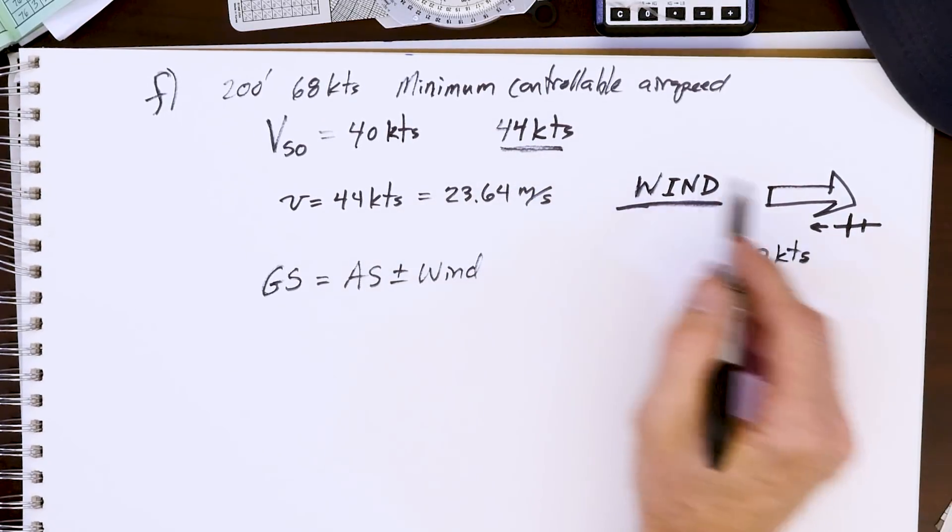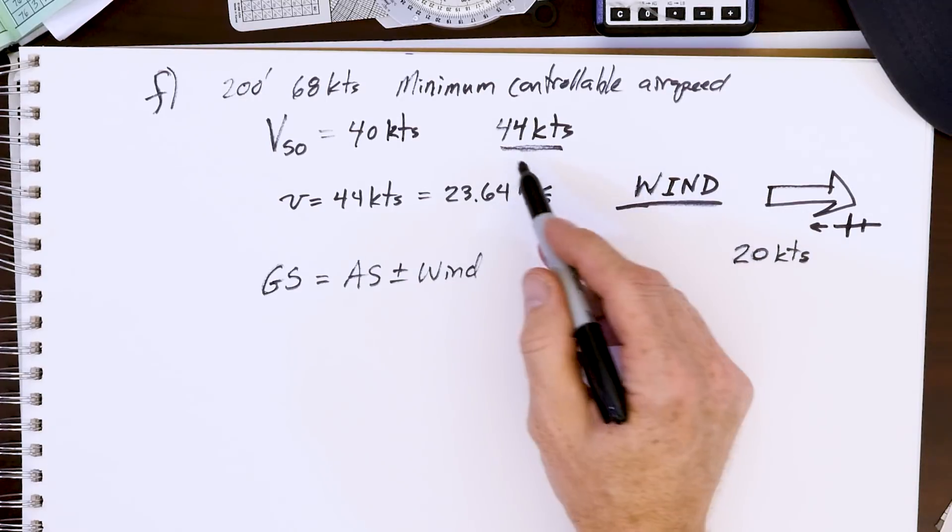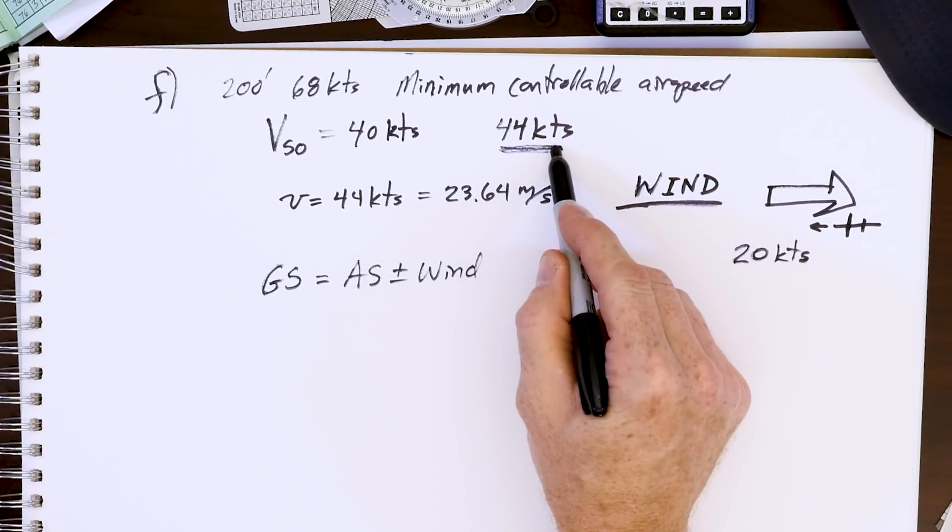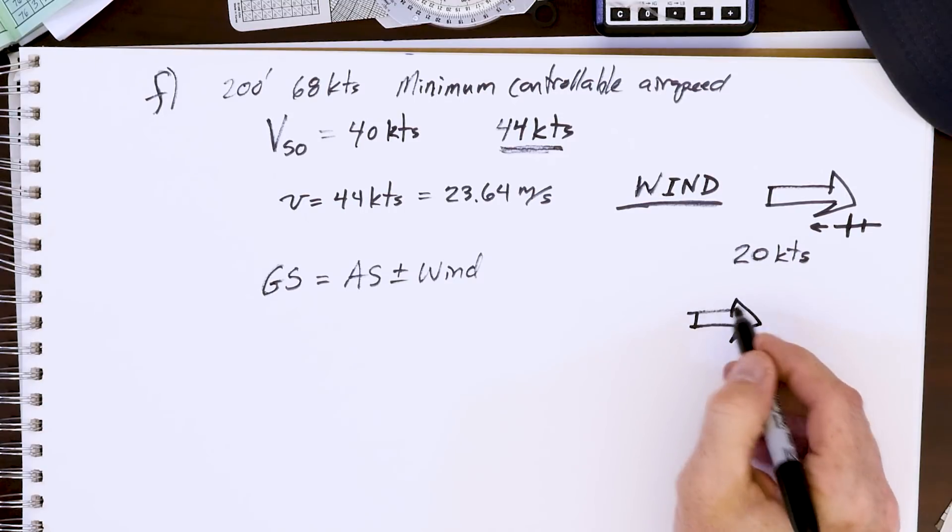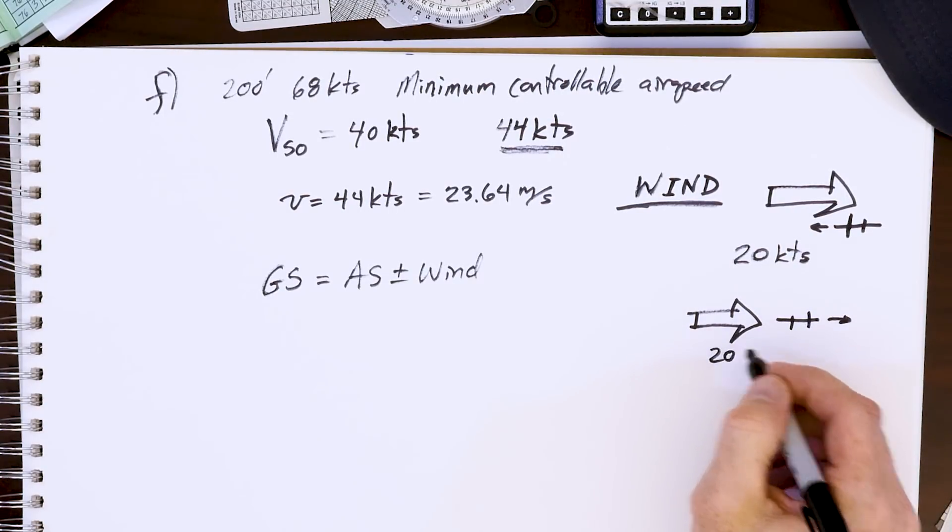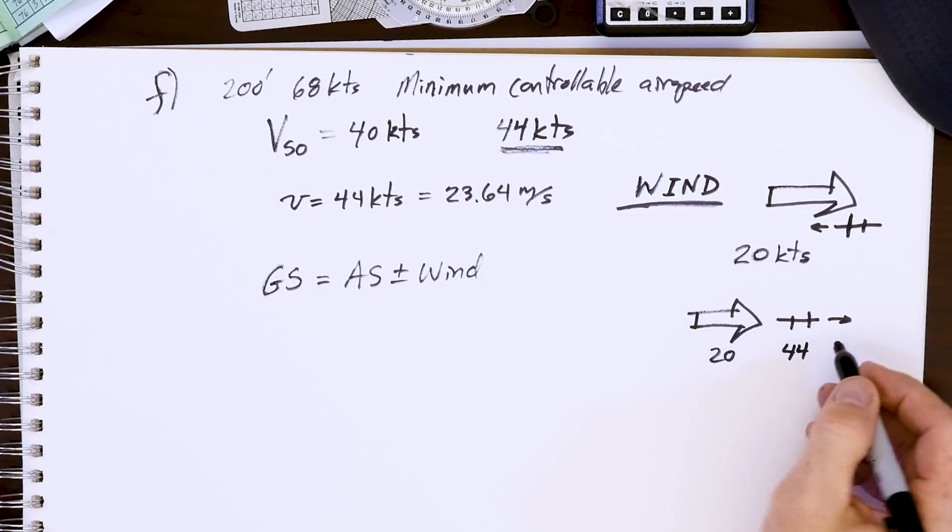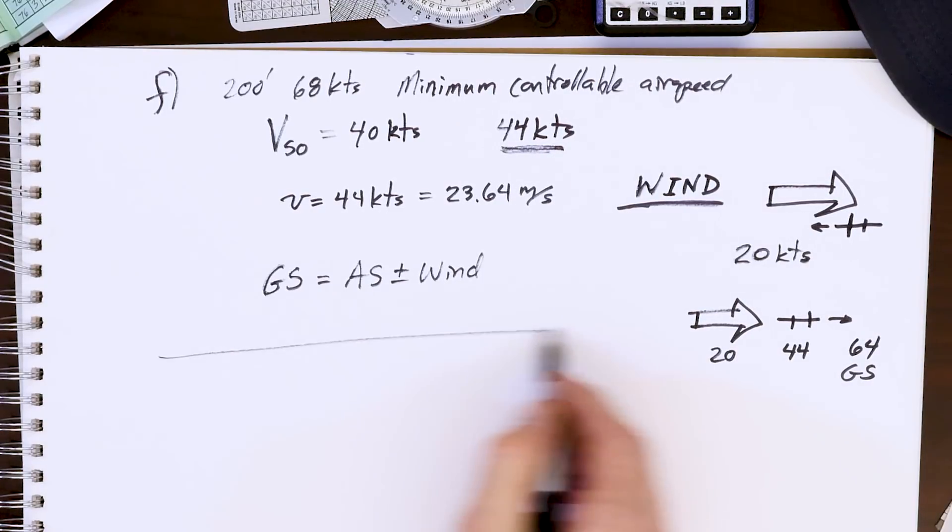If you have 44 knots of airspeed minus a 20 knot headwind, you're going to land with 24 knots of ground speed. If you get it screwed up and choose your field wrong and land with a tailwind - 20 knot wind and 44 knot airspeed - you're going to end up with a ground speed of 64 knots. 64 knots compared to 24 knots can mean life versus death if you have an actual engine failure someday.